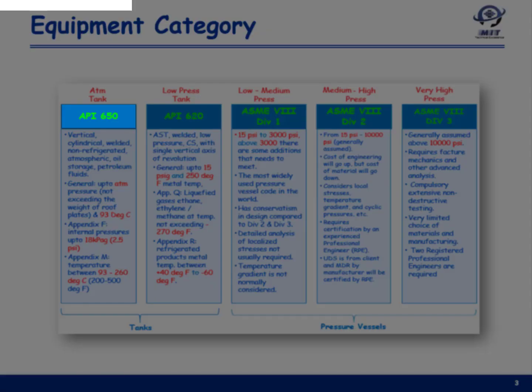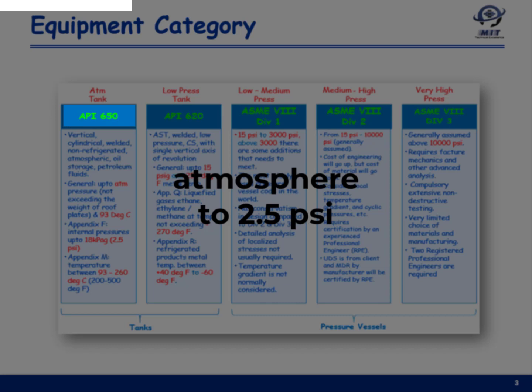First is API 650 storage tank standard, which specifically applies to storage tanks that operate at or near ambient conditions. There is also a provision in Appendix F of this standard to go up to a pressure of 2.5 psi.